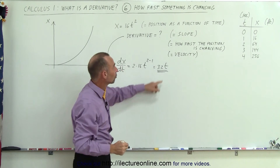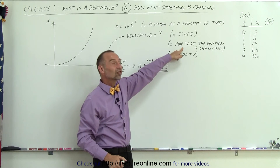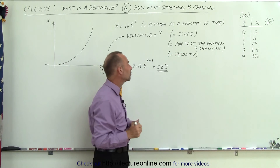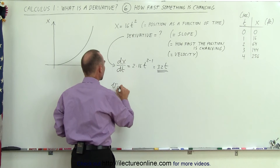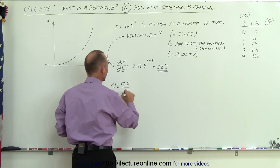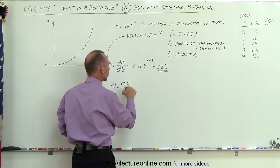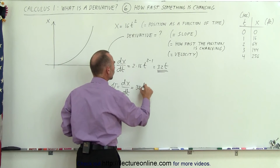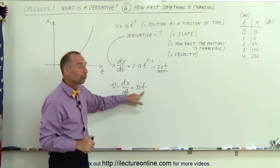What does it mean? It's the slope of the function — it tells you how fast the position is changing, meaning it tells you the velocity of the object. So the velocity v equals the derivative of x with respect to time, the derivative of position with respect to time. In this case, it's equal to 32t, which tells you how fast the object is moving.